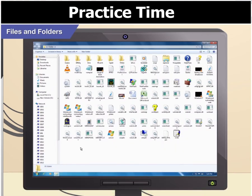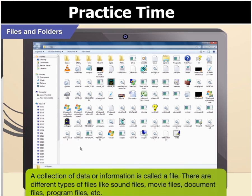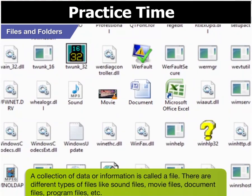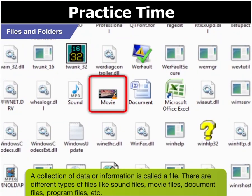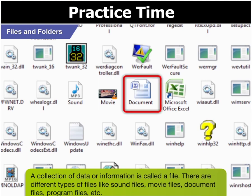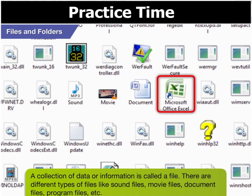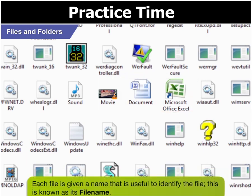How do you define a file, Toggle? A collection of data or information is called a file. There are different types of files like sound files, movie files, document files, program files, etc. Each file is given a name that is useful to identify the file. This is known as its file name.